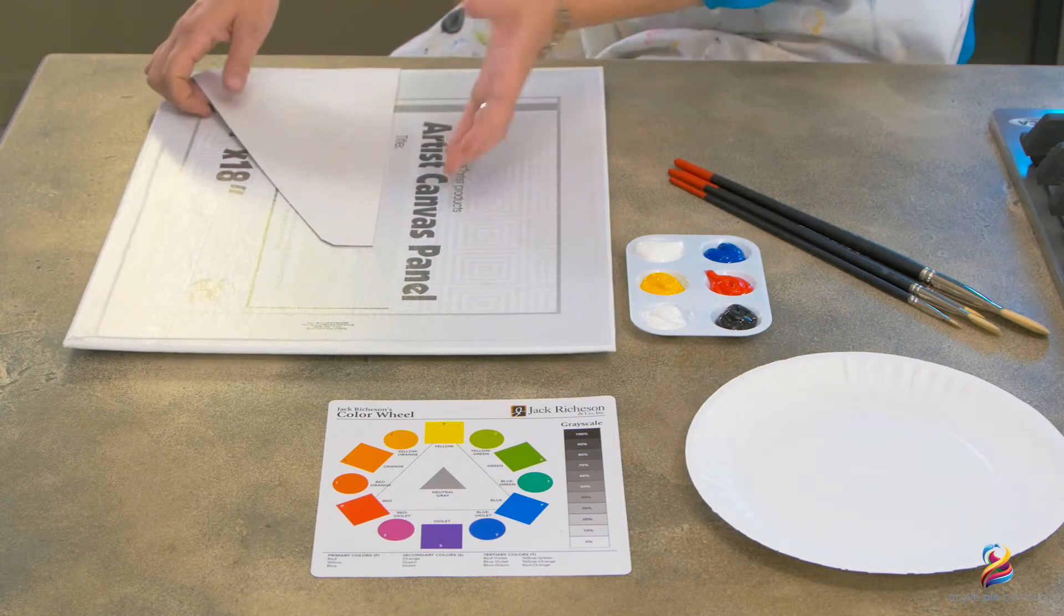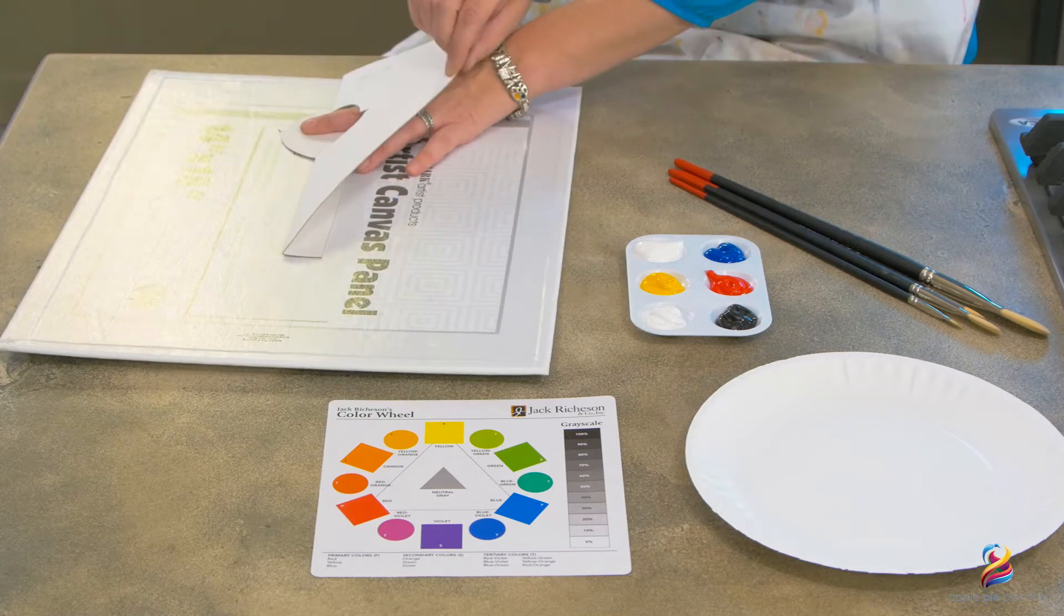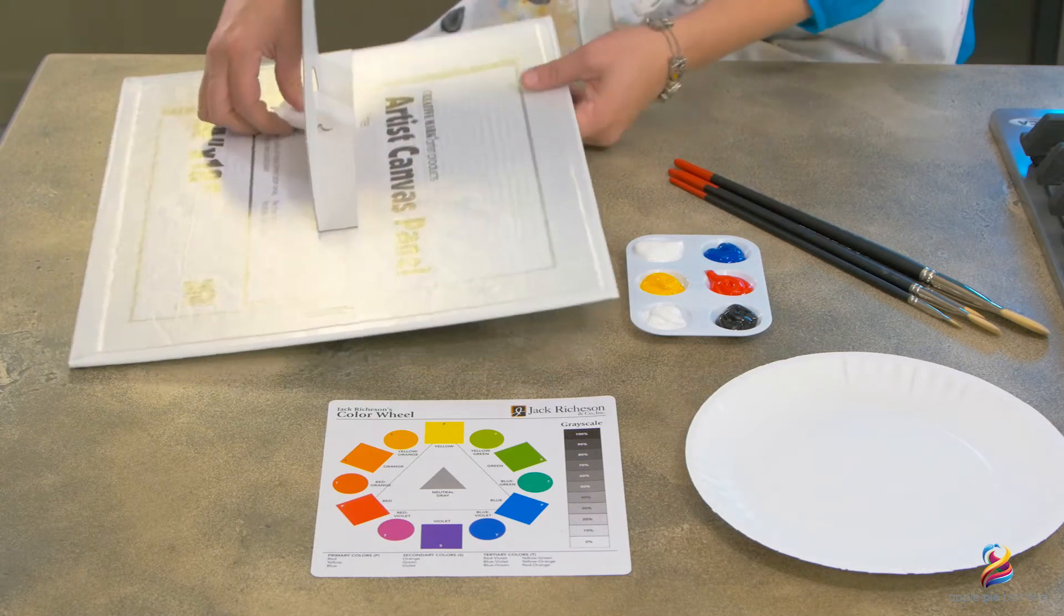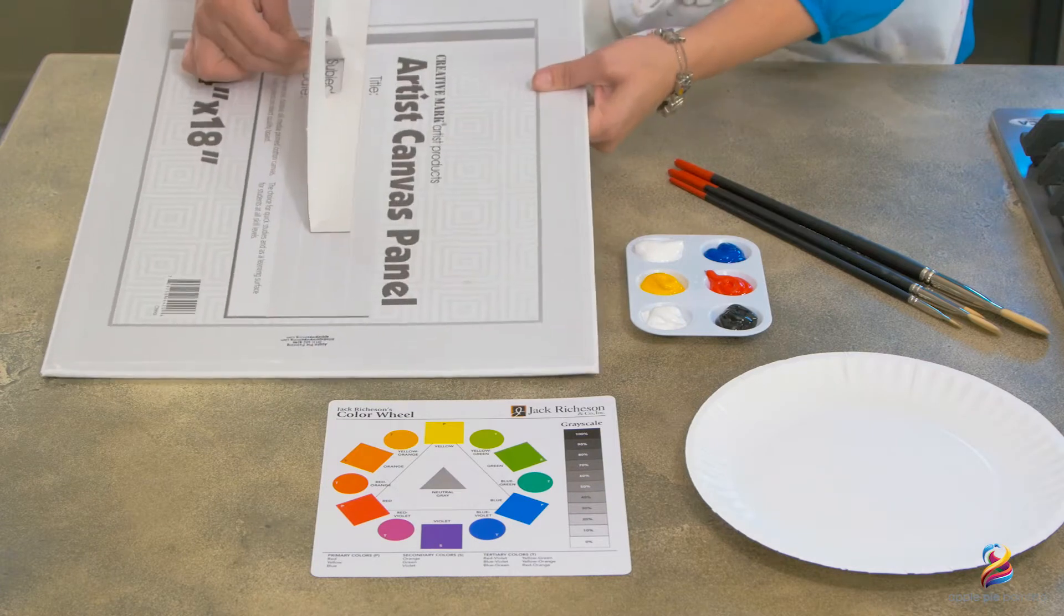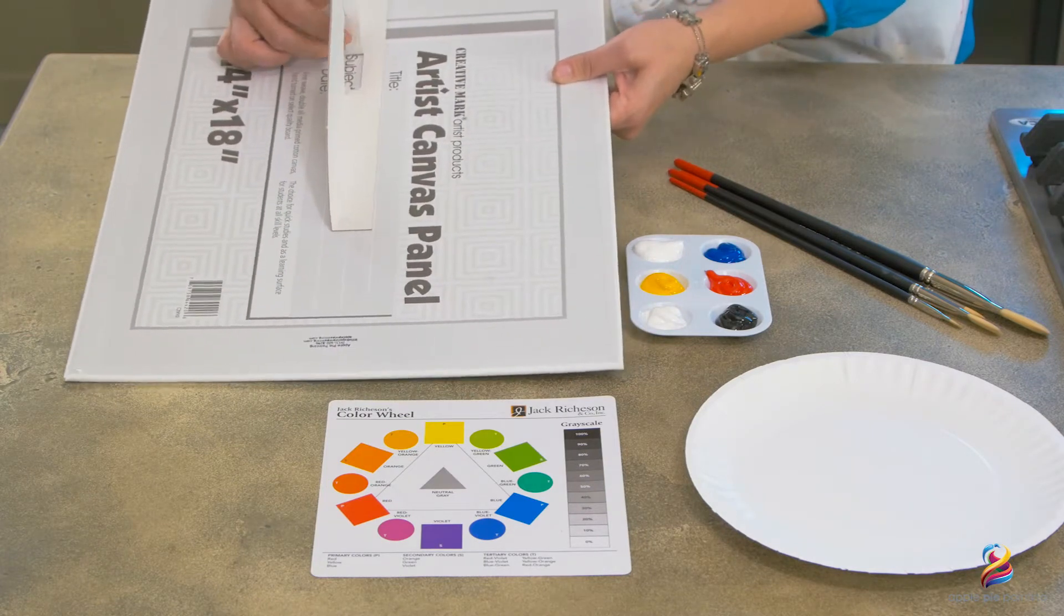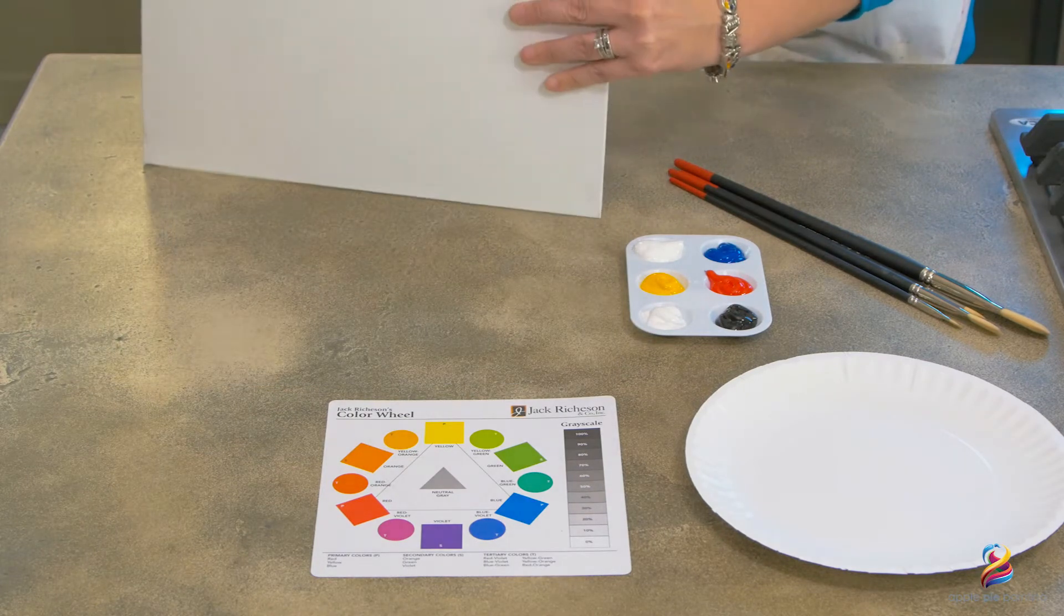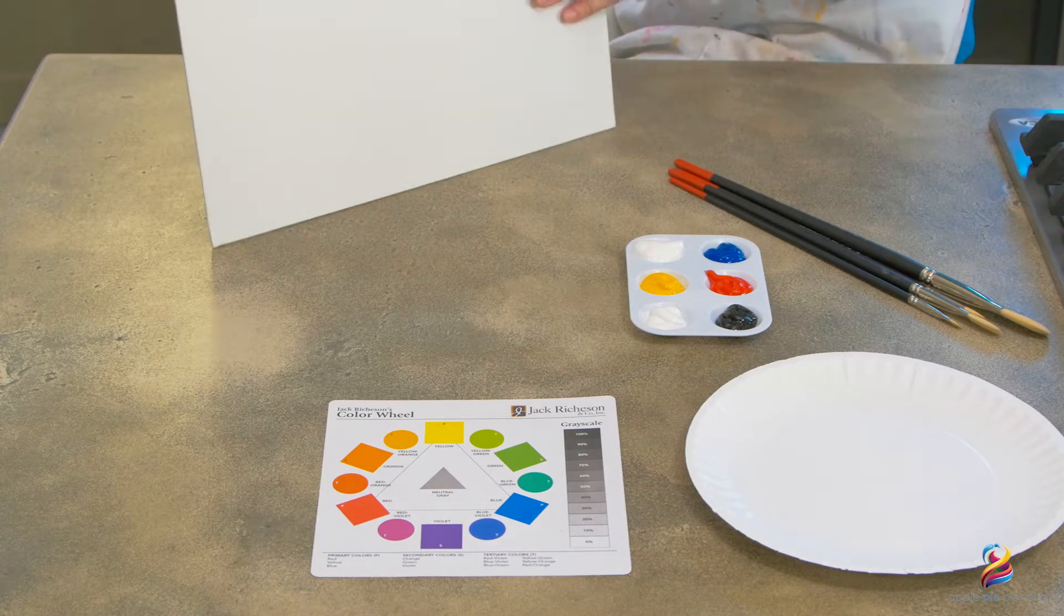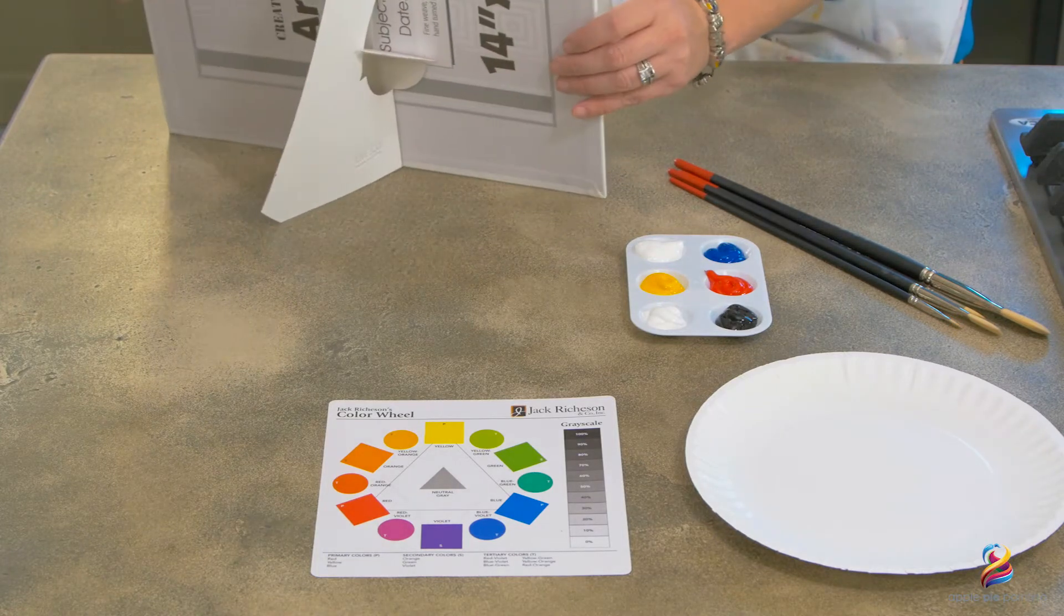All you do is flip this back like that, and then this piece here will click into the notch right here. Once that's in, you just simply stand the canvas up, you've got your easel, and you're ready to paint.